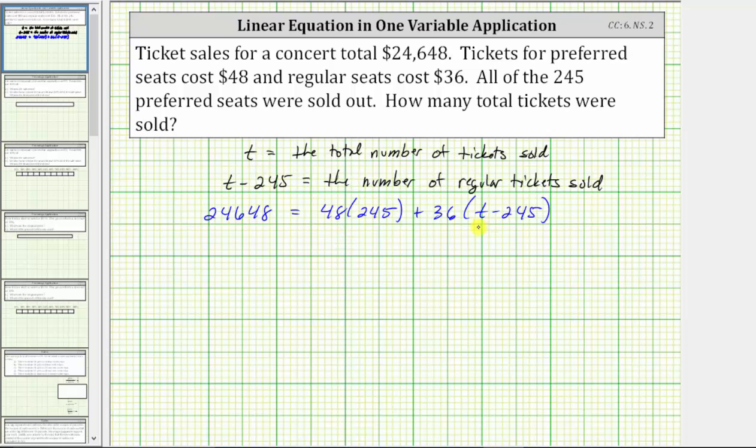For the next step, we will simplify the right side of the equation, which gives us 24,648 equals 48 times 245 is equal to 11,760, plus, here we distribute 36. Distributing 36, we have 36 times t, which is 36t, and then plus 36 times negative 245, which is negative 8,820.